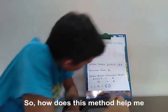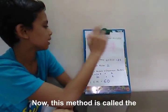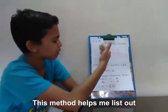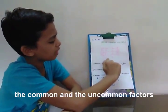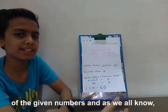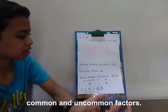So how does this method help me find the LCM? This method is called the common division method. This helps me list out the common and uncommon factors of the given numbers. As we all know, LCM is nothing but the product of common and uncommon factors.